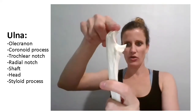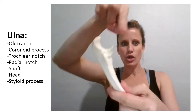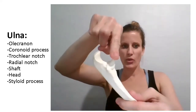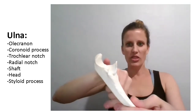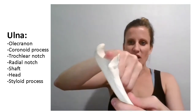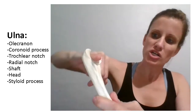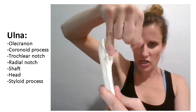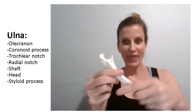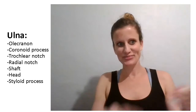The olecranon is the top process. The coronoid process is the bottom one. The trochlear notch is the notch in between those. Drop down a little, and that notch is the radial notch. And that is the ulna.